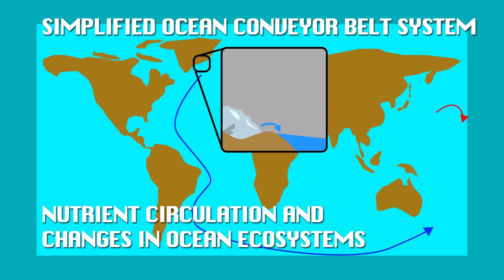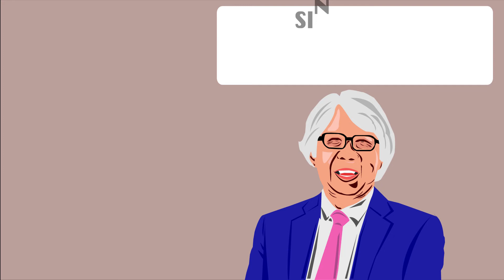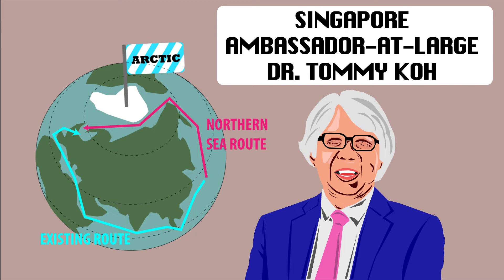The melting of Arctic ice can also affect Singapore's status as a regional shipping hub through the development of new shipping routes. The opening of the Northern Sea Route shaves 30% of travel time compared to traditional routes. As Professor Tommy Koh noted, we are one of the largest ports in the world, and development of the Northern route could impact the status and prosperity of our port.